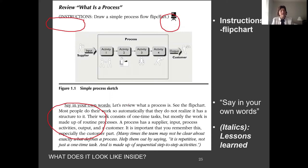The italics at the bottom are the coaching notes lessons learned. This one says many times the team may not be clear about exactly what defines a process. Help them out by saying it is repetitive, not just a one time task, and is made up of sequential step to step activities. One of the things that I emphasize right up front is to get the team into process thinking. Because we will be coming back to that again and again.